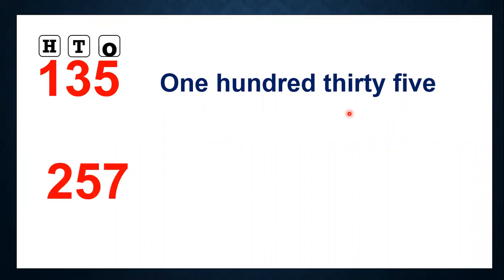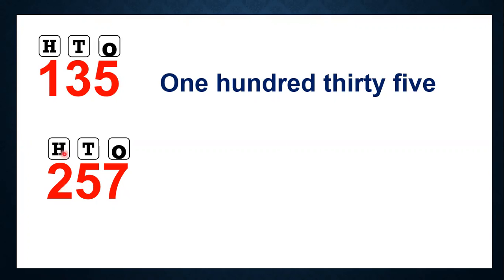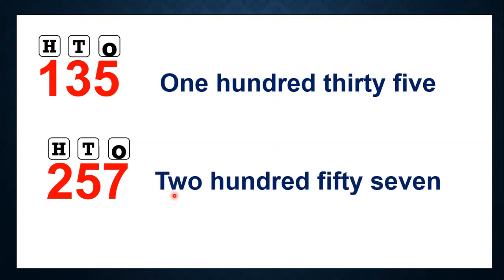Let's see another example. Here we have 257. We will write the place where these digits are. We will start from the hundreds place. So what number we have here? 2. Then we'll say the place where it is — 257. So 257.